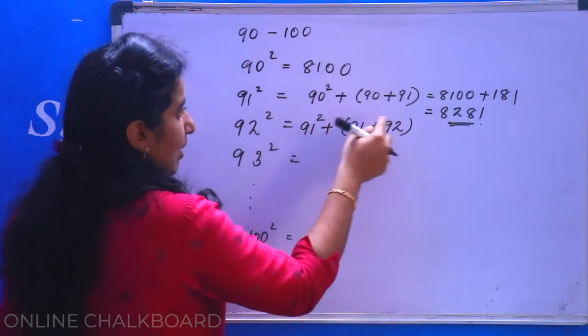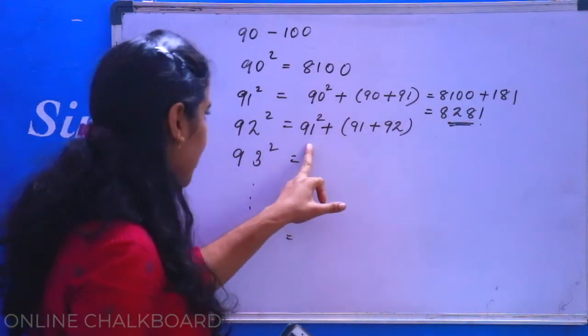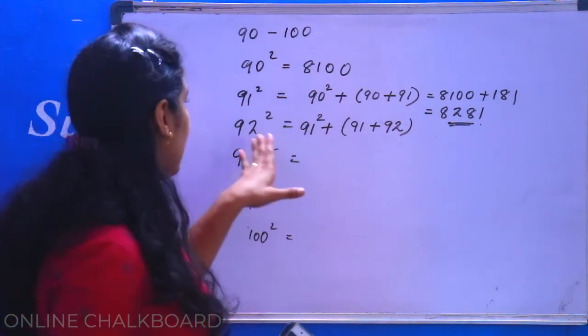Okay, here we have 91 square, 8281. Then we have 90 square plus 91 plus 92, then we have 92 square.